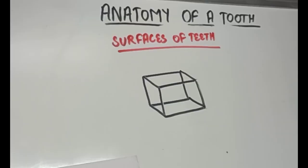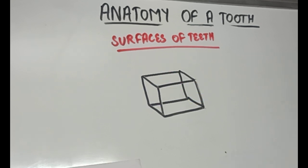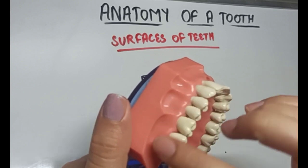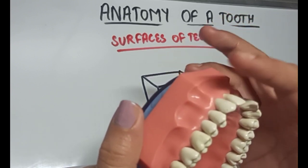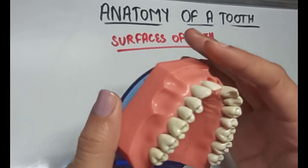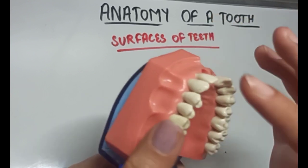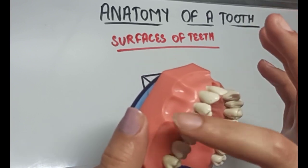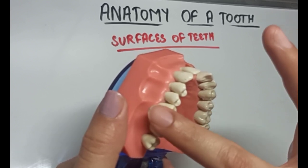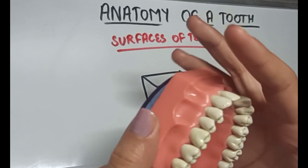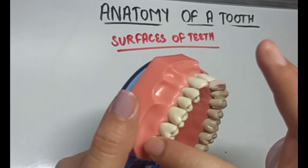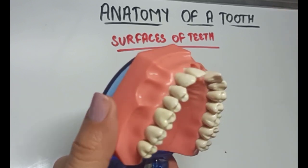Now let's see the surfaces of the teeth. Imagine a tooth as a cube with 5 surfaces, since the tooth does not have a bottom surface. The surface of the tooth that is towards the face is called the facial surface. In anterior teeth, this surface is towards the lip, so it is called the labial surface. In posterior teeth, this surface is towards the cheek, so it is called the buccal surface. So facial surfaces for anteriors are called labial and for posteriors are called buccal surfaces.